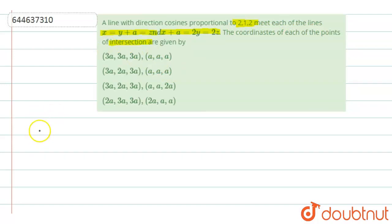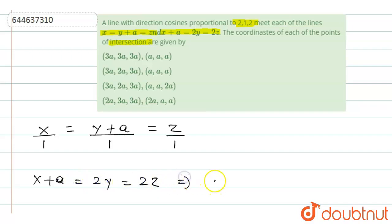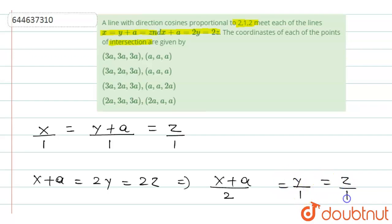The first line can be written as x/1 = (y + a)/1 = z/1. Similarly, the second line x plus a equals 2y equals 2z — dividing the complete equation by 2 — can be written as (x + a)/2 = y/1 = z/1. Let us take the parameter for the first line as r and for the second line as l.